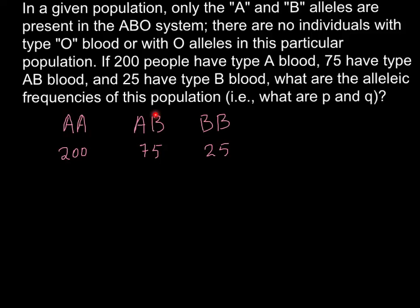How are we going to solve this problem? As you see, we have 200 people with capital A and capital A and that means that this particular people have two alleles and we have 200 people and 200 people would have 400 alleles of the type A. And we have 75 people with two alleles AB and that means that these 75 people have 150 alleles. And we have 25 people with BB alleles. And that means that this 25 people have 50 alleles of the type B.